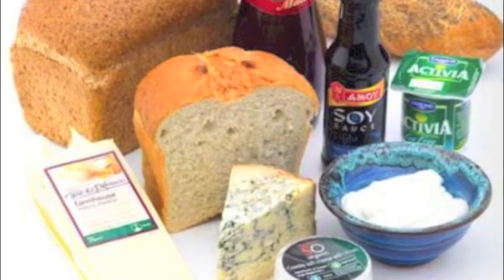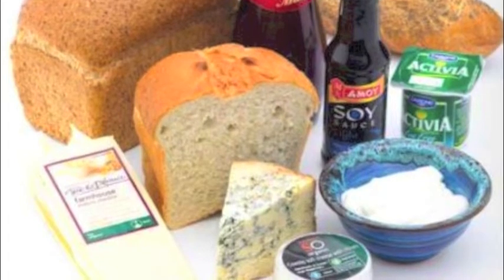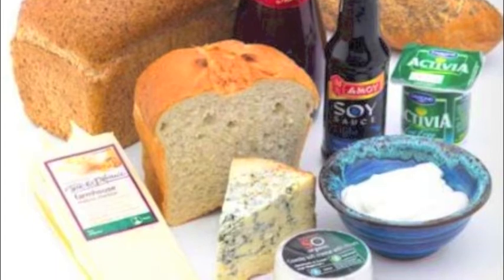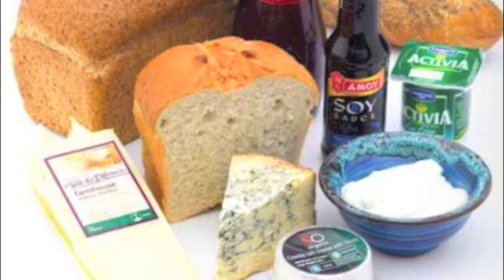People have been using microorganisms to make foods and drinks for thousands of years. Yeast is a single cell fungus. It is used to make bread, wine and beer. Cheese and yogurt can be made from milk using microorganisms called lactic acid bacteria. Blue cheeses are made using types of mould.